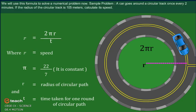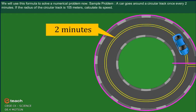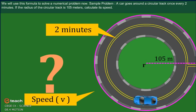We will use this formula to solve a numerical problem now. Sample problem A: A car goes around a circular track once every 2 minutes. If the radius of the circular track is 105 meters, calculate its speed. Given π = 22/7.